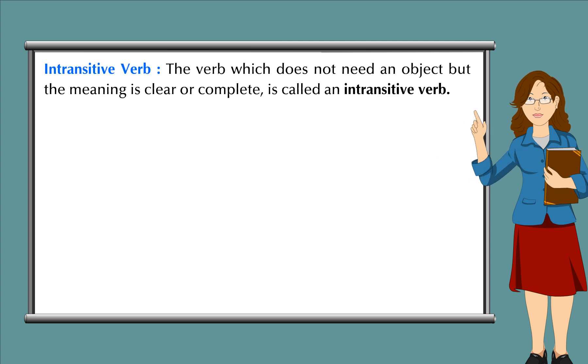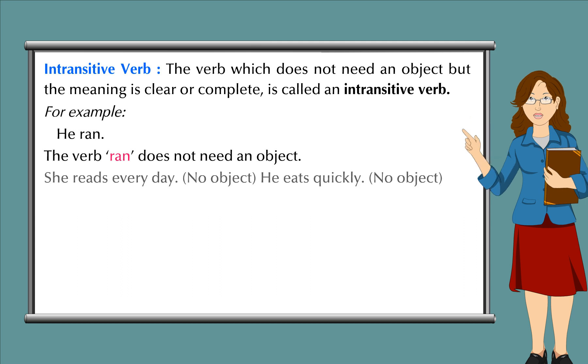Intransitive verb: The verb which does not need an object but the meaning is clear or complete is called an intransitive verb. For example, he ran. The verb ran does not need an object. She reads every day—no object. He eats quickly—no object.